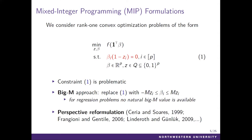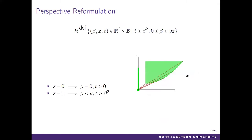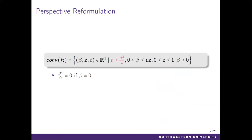What does the perspective reformulation do? Let's take the simple three-dimensional case as an example. Suppose we have one indicator variable and one continuous variable. When D equals zero, the feasible space has to be zero and the epigraph becomes a line passing through the origin. When D equals one, it's the epigraph of a quadratic function. We obtain the convex hull by joining the line between the origin and the boundary of the convex epigraph. The convex hull is obtained by taking the perspective function of the one-dimensional quadratic function. We adopt the convention that beta squared divided by zero is zero if beta is zero.